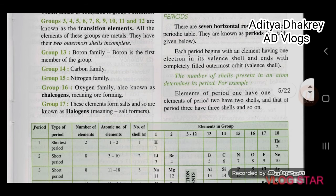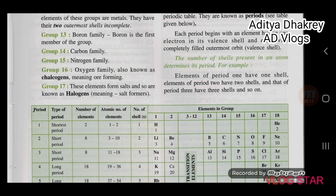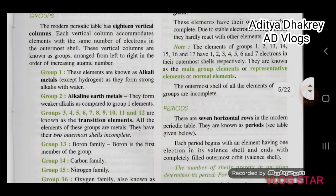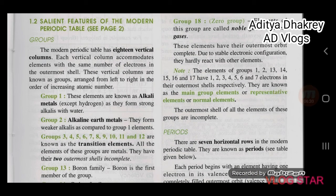Group 17 elements form salts and so are known as halogens, meaning salt formers. Group 18 elements are called noble gases or inert gases. These elements have their outermost orbit complete; due to their stable electronic configuration, they hardly react with other elements.